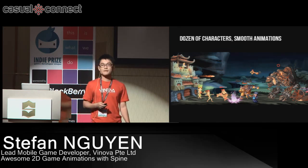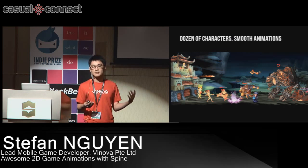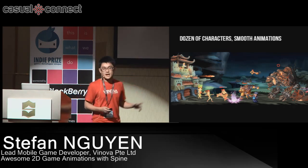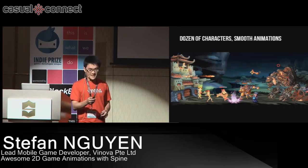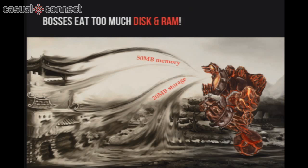We had been using AnimStudio and frame-based animation for this game, and it went well for 2 to 3 months — until we created this big guy, Golem, the big boss. He's gorgeous, big, and quite heavy. For this single boss, we needed 20 megabytes of storage, which translates into 50 megabytes of memory. 50 megabytes, plus other characters, plus memory for background, music, and sound — we quickly ran out of memory at runtime, and our game would crash. It was a big problem.